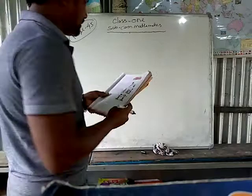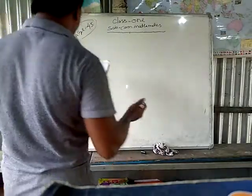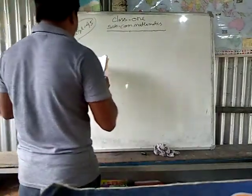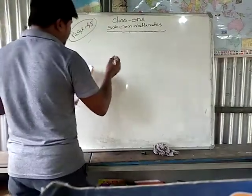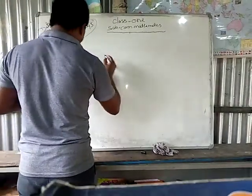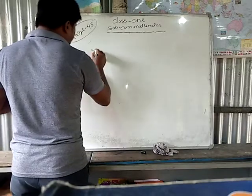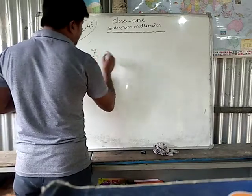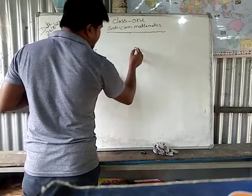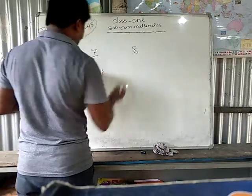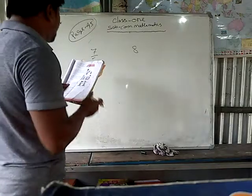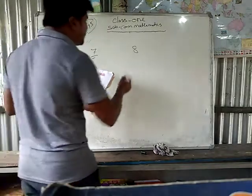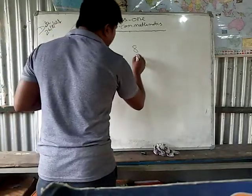So, this is a subtraction problem. How many letters are there in total? Total letters — how many are there? 8. How many have a stamp? 5.